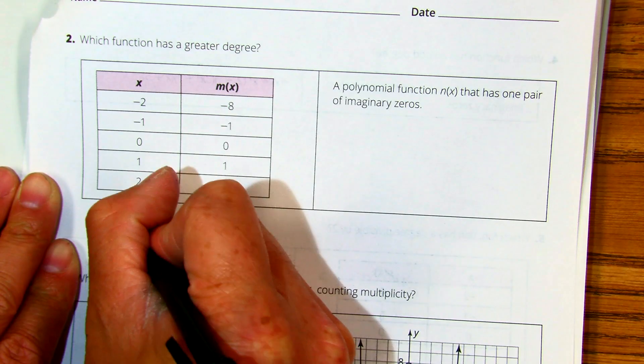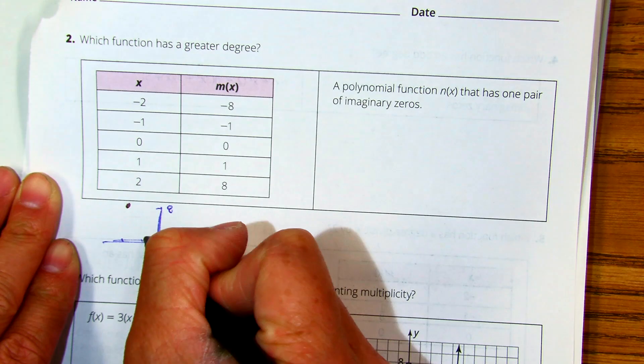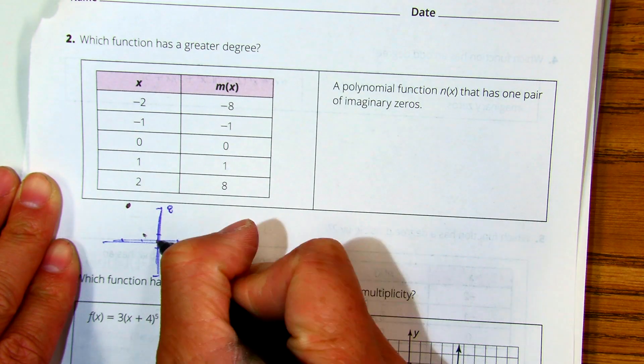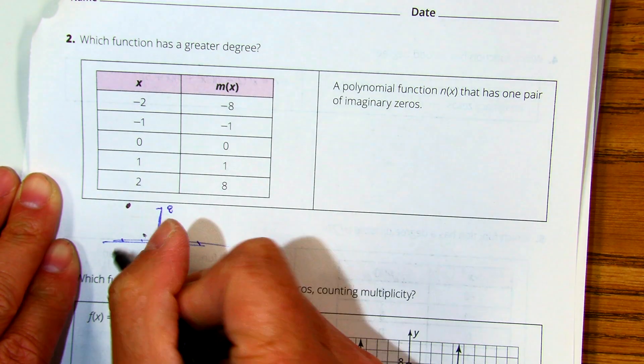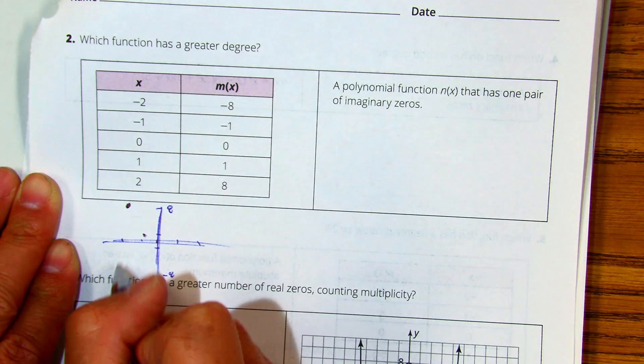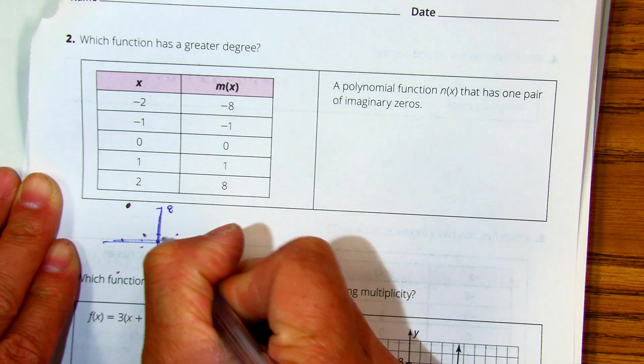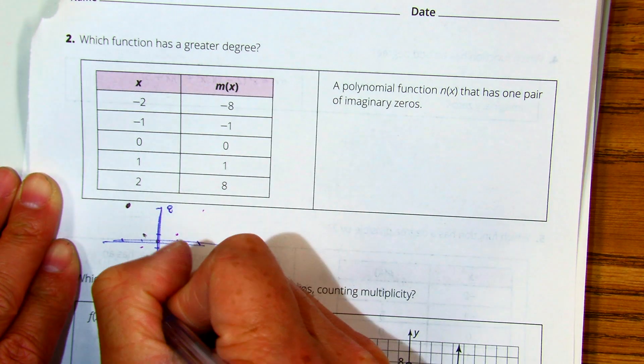Negative two, negative eight. Negative one, one. Zero, one, one. And right two, up eight. So it looks linear.